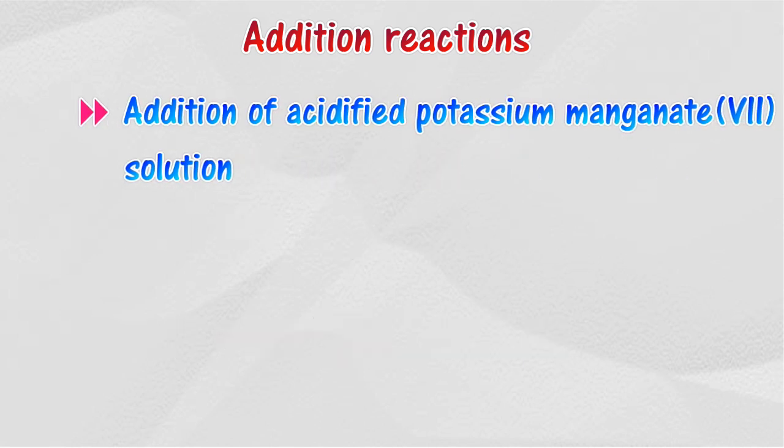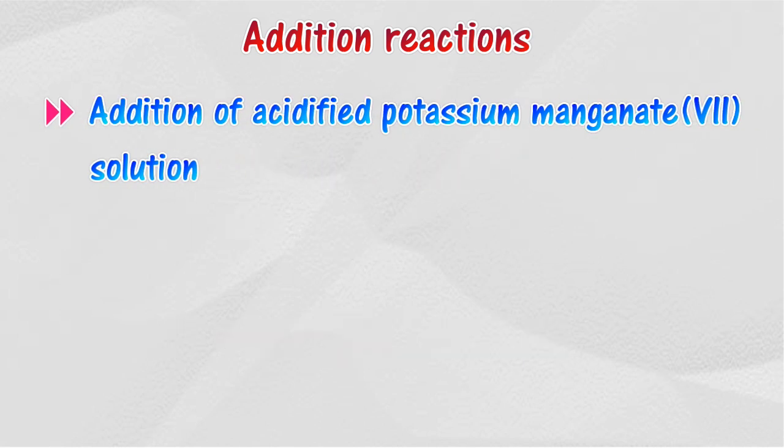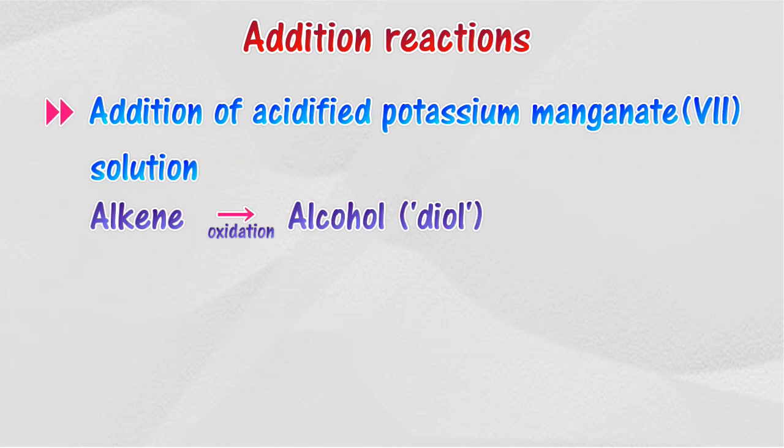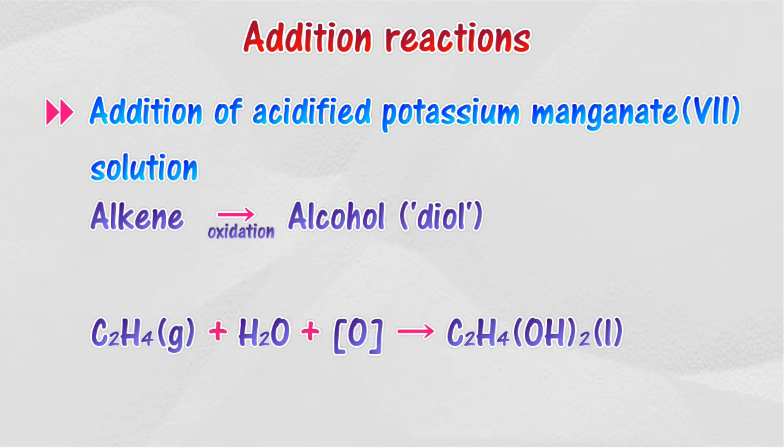Alkenes react with acidified potassium manganate-7 solution to produce diol alcohol. When an alkene is shaken with acidified potassium manganate-7 solution, an addition reaction occurs.